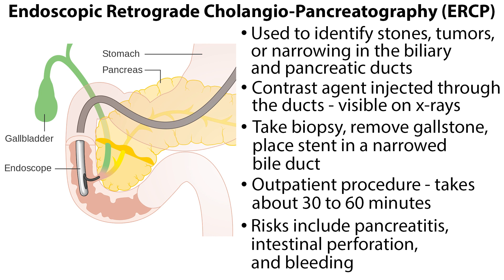Another test involving the oral insertion of an endoscope is the Endoscopic Retrograde Cholangiopancreatography, or ERCP. This test is used to identify stones, tumors, or narrowing in the biliary and pancreatic ducts. Once the endoscope is properly placed, contrast agent can be injected through the ducts, which is visible on x-rays. If needed, a biopsy can be taken, a gallstone can be removed, or a stent can be placed in a narrowed bile duct. An ERCP is an outpatient procedure that usually takes about 30 to 60 minutes, followed by 1 to 2 hours in recovery. The risks of ERCP include pancreatitis, intestinal perforation, and bleeding.